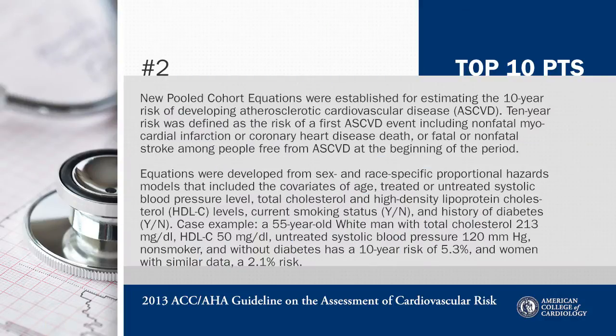The second point is that the new pooled cohort equations for estimating atherosclerotic cardiovascular disease risk were developed from sex and race-specific proportional hazard models, and these included covariates for age, treated and untreated systolic blood pressure, total cholesterol and HDL, current smoking status, and a history of diabetes.